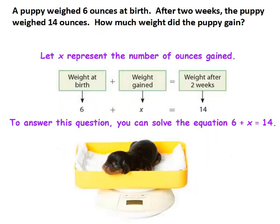A puppy weighed 6 ounces at birth. After two weeks, the puppy weighed 14 ounces. How much weight did the puppy gain? Let's let x represent the number of ounces gained. To answer this question, you can solve the equation 6 plus x equals 14.